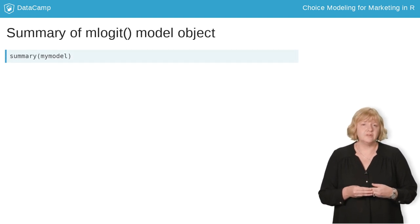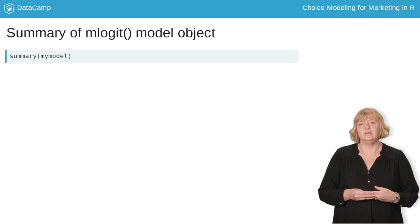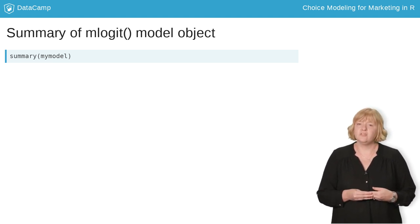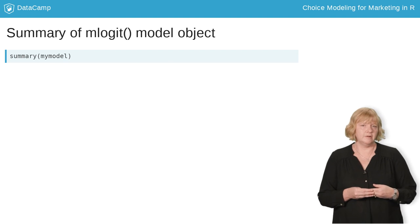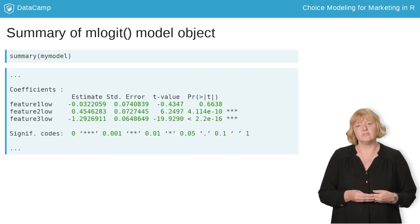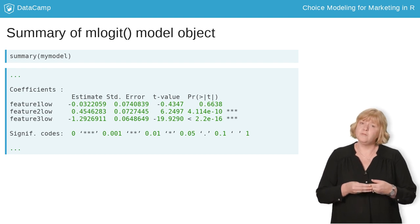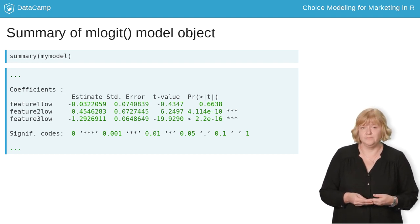When we ask for a summary of the mLogit model object, we get output that looks a lot like what you would get from a regression. The most important part of the summary output is the table of coefficients. We'll go into more detail on all of the output, but for now let's focus on the column labeled estimate.